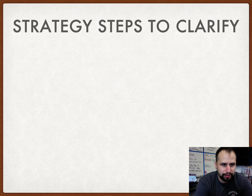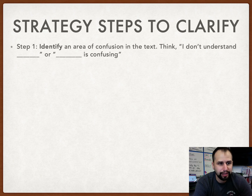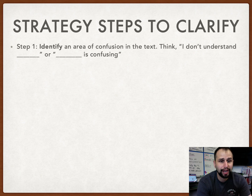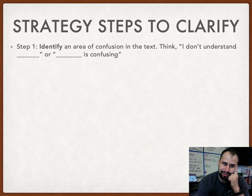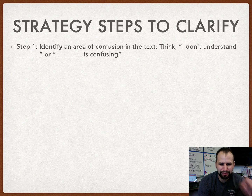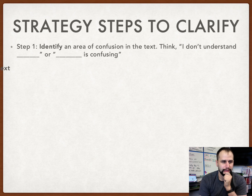There are four steps to clarifying thinking. First, you need to identify when you're actually confused. This happens when you have ideas like, 'I don't understand this in the text,' or 'this word is confusing.' That's the first step — identifying — and that just happens in your head as you think.